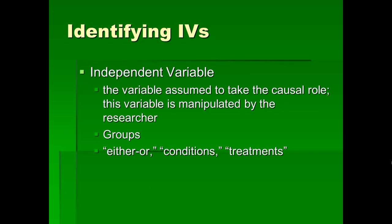Now that we've identified the variables and the constants, we need to specifically identify the different types of variables. One type of variable is the independent variable, defined as the variable assumed to take the causal role — it's causing something else to change, or it may. That's why I say assumed. Also, this variable is manipulated — meaning controlled — by the researcher, so the researcher can determine who gets what.